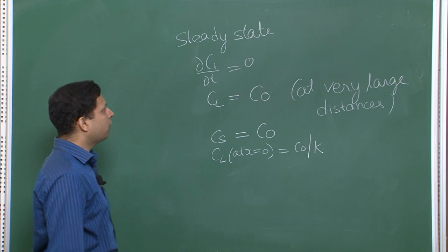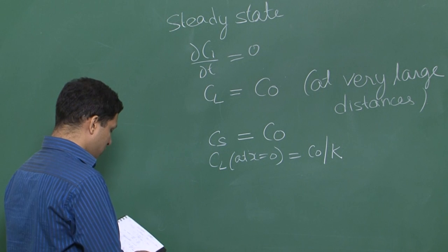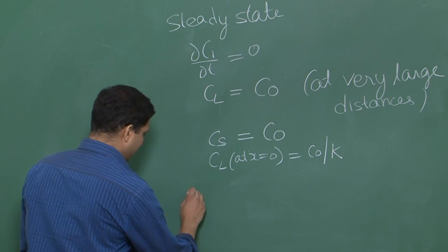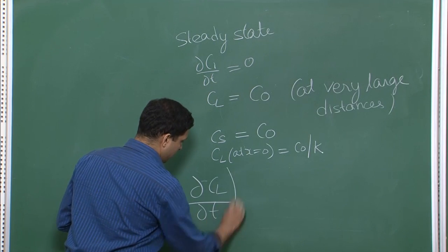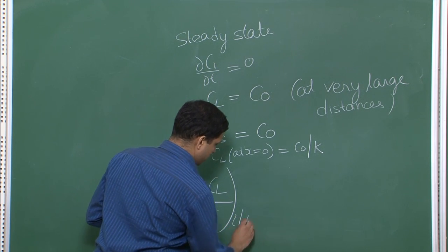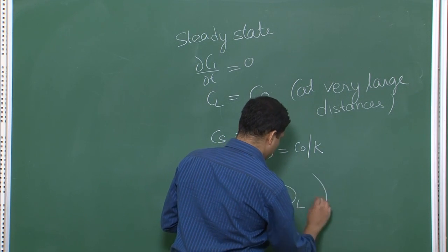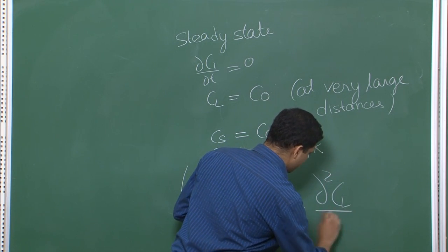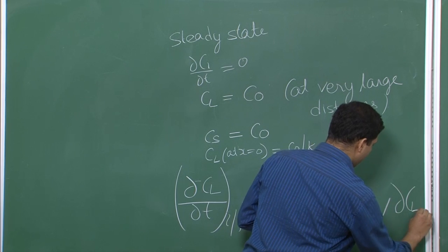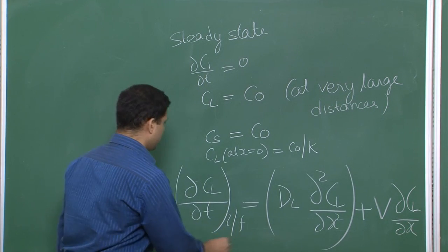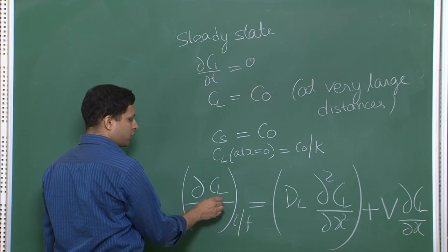We will continue with solving our equation for the steady state. This is the equation we arrived at, written in terms of liquid: del C_L over del t with respect to the interface reference frame equals D_L (diffusivity in the liquid) times del²C_L by del x² plus V times del C_L over del x. There are two conditions: steady state when this is zero, and transient when it is not.